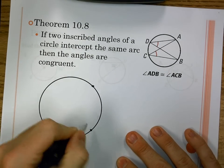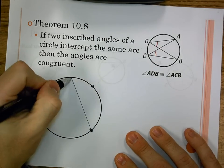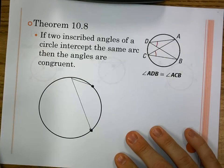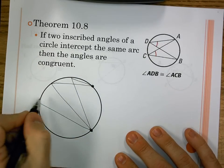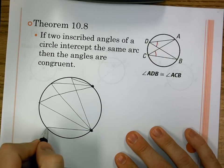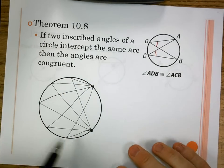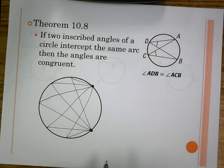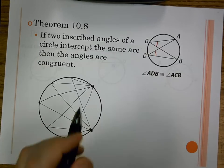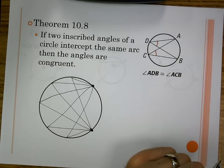Take an arc from point to point and draw several inscribed angles — you can keep drawing more between any two points. All of those angles go to the same arc. If that arc is 90 degrees, every one of those angles would be half of that — 45 degrees. If the angles are the same, they're congruent.